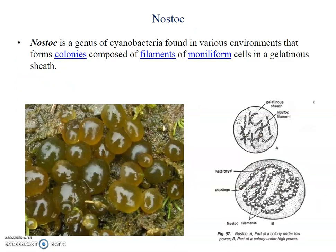Where is Nostoc found? Nostoc is a genus of cyanobacteria found in various environments that form colonies, composed of filaments and normally formed cells in gelatinous sheets. Nostoc is found in water, in wet soil, as well as places where moisture is abundant in large quantities.